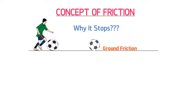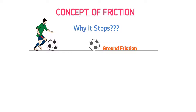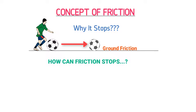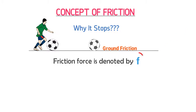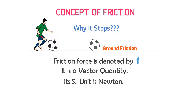Whenever you see a moving object stop after covering some distance, think that it is the ground friction that stops or slows down moving objects. How does friction stop this football? If the football moves in one direction, the friction force acts in the opposite direction. Friction force always resists moving objects. Remember that friction force is denoted by small f. Since it is a force, it is a vector quantity and its SI unit is Newton.